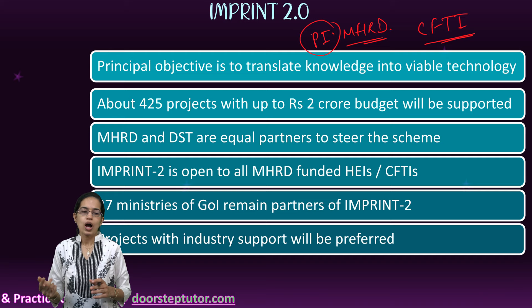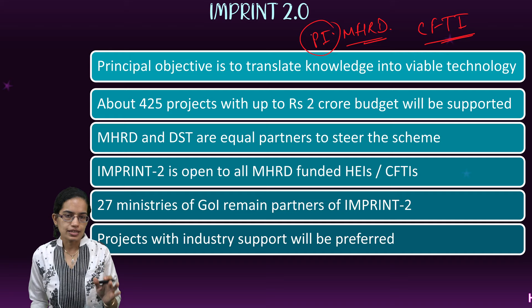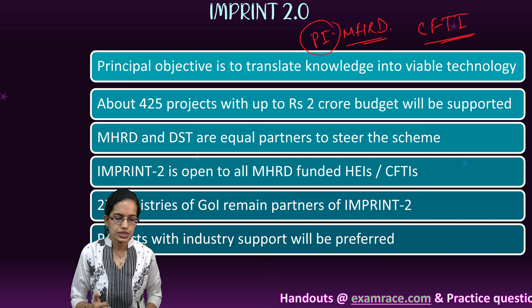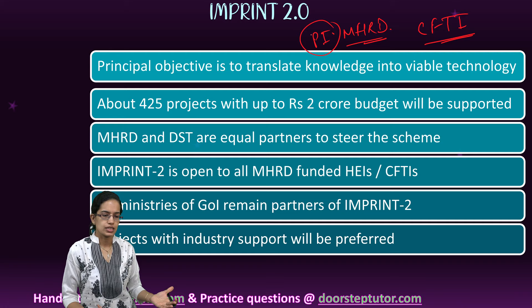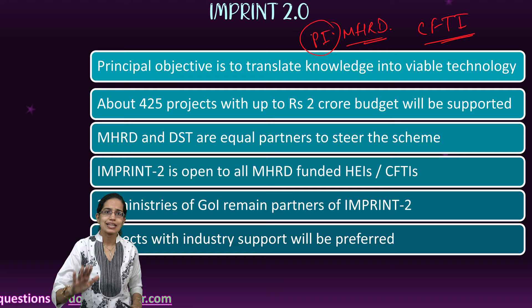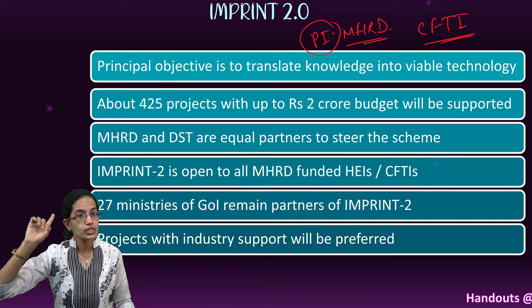Proposals under IMPRINT 2.0 must address any of the 10 declared themes or domains covered in the first lecture, and should connect a new research idea to an existing research idea within the same domain. The project proposal should be very clear, very convincing, and focused on translational research.